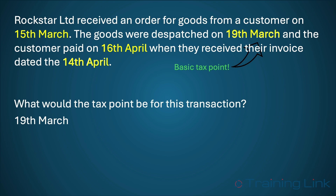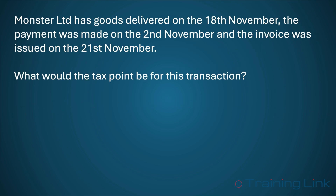Let's now look at a second example. Monster Limited had goods delivered on the 18th of November. Payment was made on the 2nd of November and the invoice was issued on the 21st of November. What would be the tax point on this transaction? The basic tax point would be the 18th of November as that's when the goods were made available to Monster. However, because payment was made on the 2nd of November, which is before the basic tax point, this would have created an actual tax point. This would therefore be the tax point for this transaction.